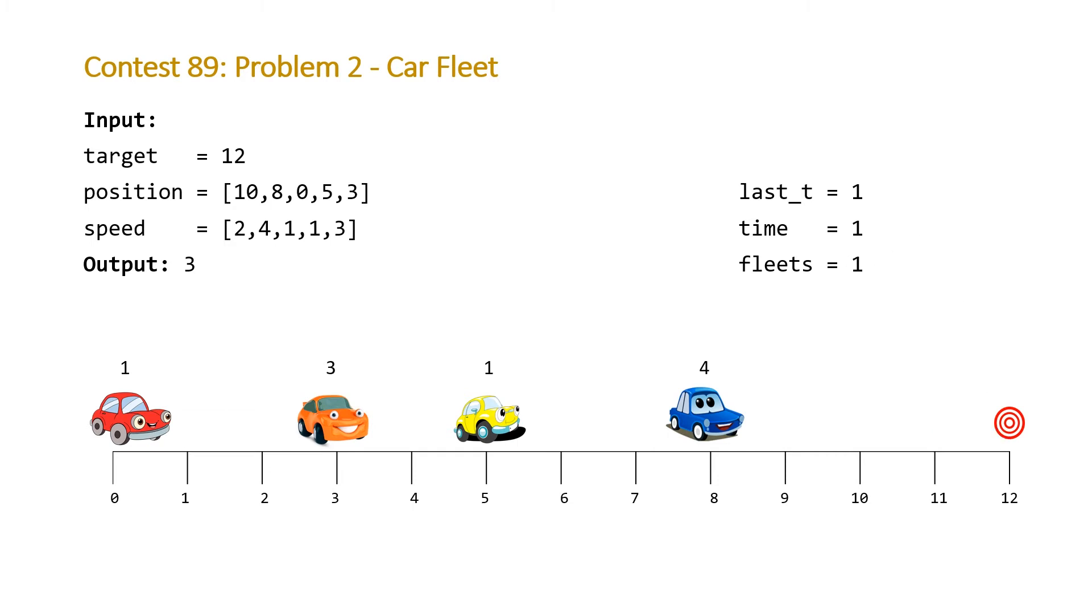At this point, we can get rid of the purple car. We know we have at least one fleet due to the purple car, and we're going to now process the blue car. We're going to calculate the time that the blue car is going to arrive the same way we did for the purple. The blue car has four miles to go, and it's driving at four miles per hour. So it's also going to arrive at time one. But because our purple car already arrived at time one, we know that they're going to be in the same fleet. So the blue car is not going to start a new fleet. So we can just ignore the blue car.